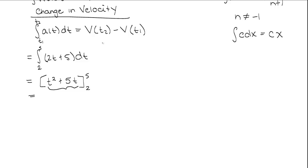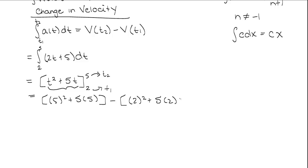We'll use that velocity function for the second part. We plug in t2 first, which is 5, and t1 is 2. Plugging in 5: we get 5 squared plus 5 times 5, minus plugging in 2: 2 squared plus 5 times 2. Simplifying: 5 squared is 25, plus 5 times 5 is 25, giving 50. Then minus 2 squared which is 4, plus 5 times 2 which is 10, giving minus 14. So 50 minus 14 is 36, with units of meters per second.